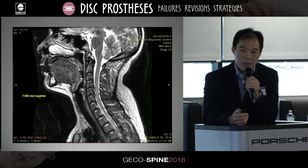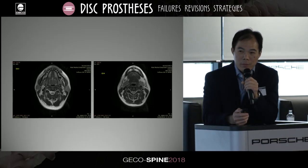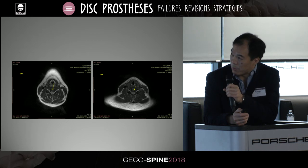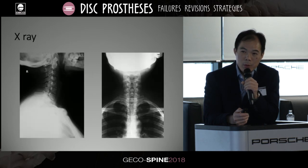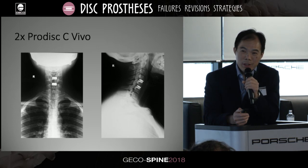This is a 36-year-old with neck pain, arm pain, and numbness. The MRI shows bulging discs at C4-5 and C5-6 with some mild cord impingement causing symptoms. She failed conservative treatment. The MRI and X-ray showed compression at C4-5 and C5-6 on the spinal cord. She had two ProDisc C Vivos put in.